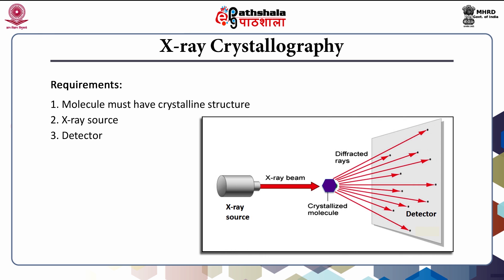In this slide you can see all three requirements in the picture on the right-hand side. Here you can see the X-ray source giving X-rays, X-ray beams coming and hitting a crystal made up of either protein or any biopolymer, and you can see this colorful diffraction pattern of the beams hitting the detector. All three requirements are needed for performing an X-ray crystallography experiment.